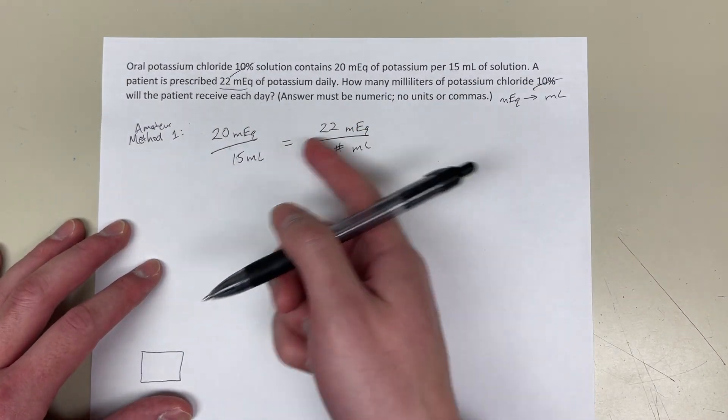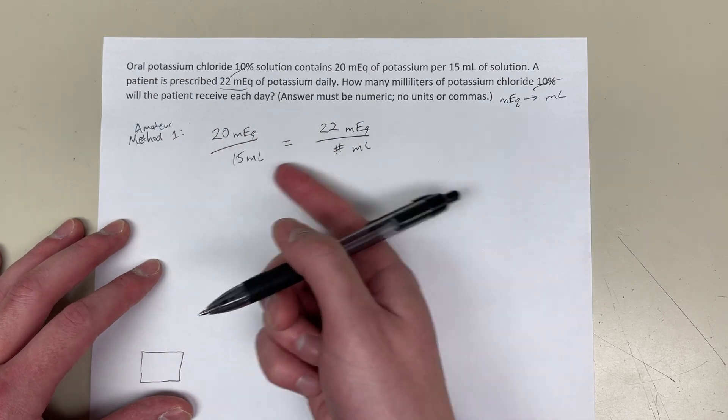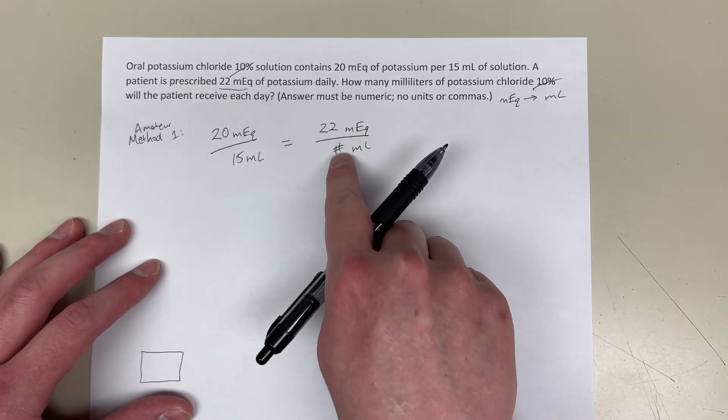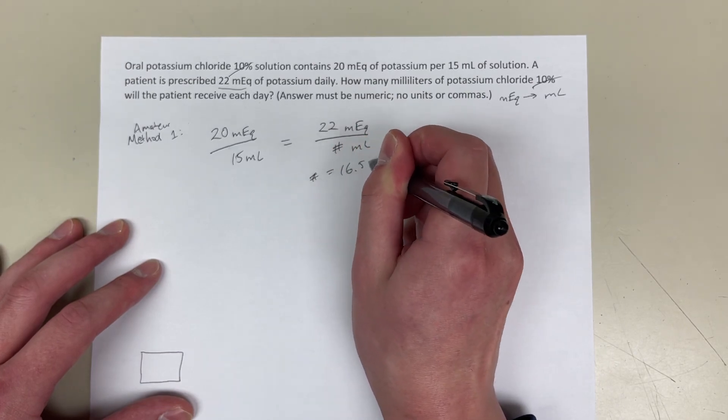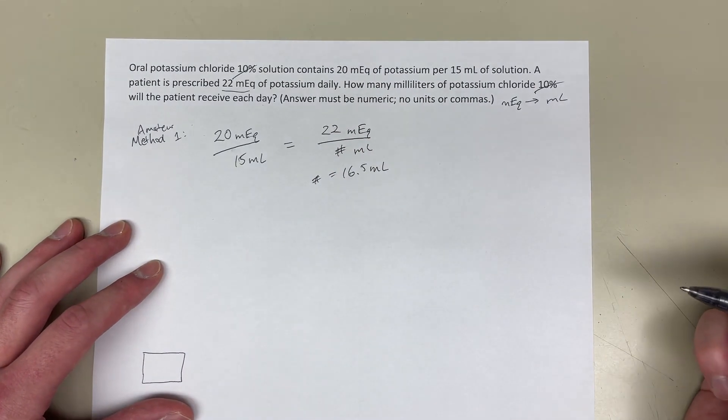So, you can either cross-cancel or you do whatever fancy math to find out what this unknown is. You'll find out that that number is 16.5 milliliters.